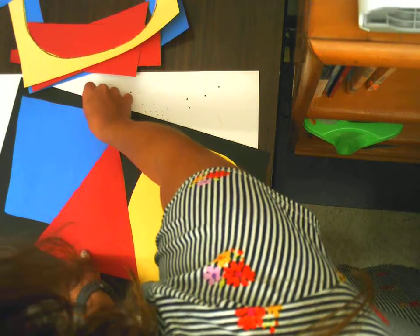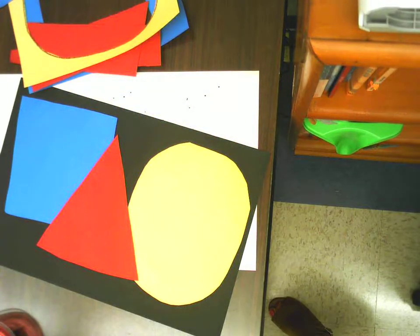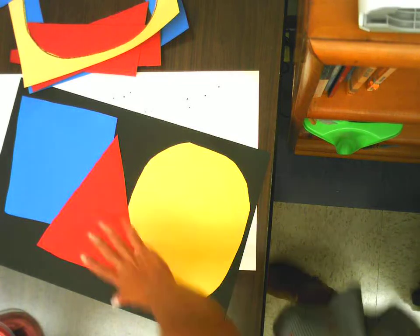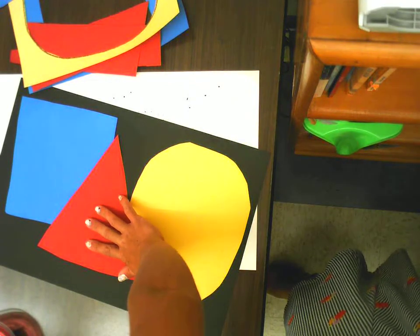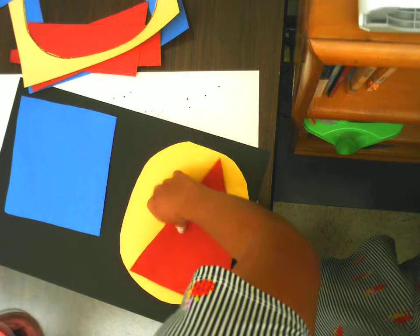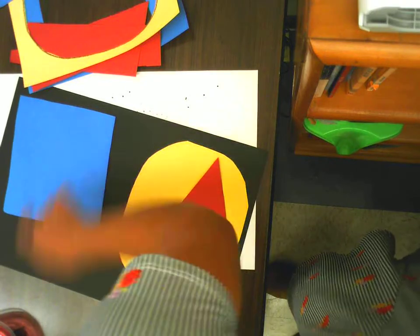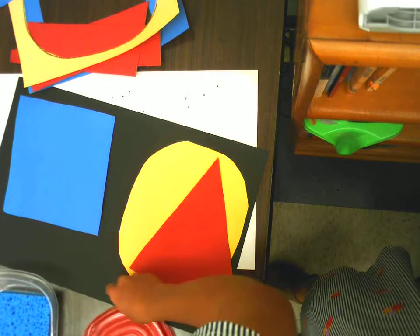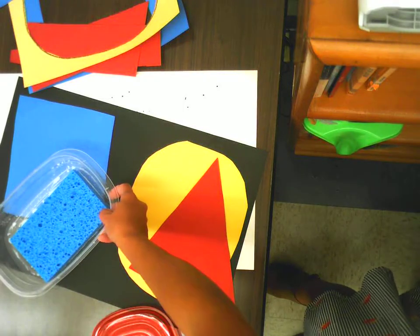When you decide on something that works for you, we're going to start gluing. I think I'm going to leave mine like that. Since my red shape is on top, I'm going to glue that last and I'm going to start by gluing my blue square. We are using our glue sponges.